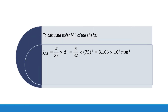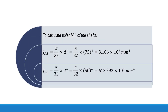We calculate the polar moment of inertia J for each segment. For segment AB with diameter 75 mm: J = (π/32) × 75⁴ = 3.106 × 10⁶ mm⁴. For segment BC with diameter 50 mm: J = (π/32) × 50⁴ = 613.592 × 10³ mm⁴.